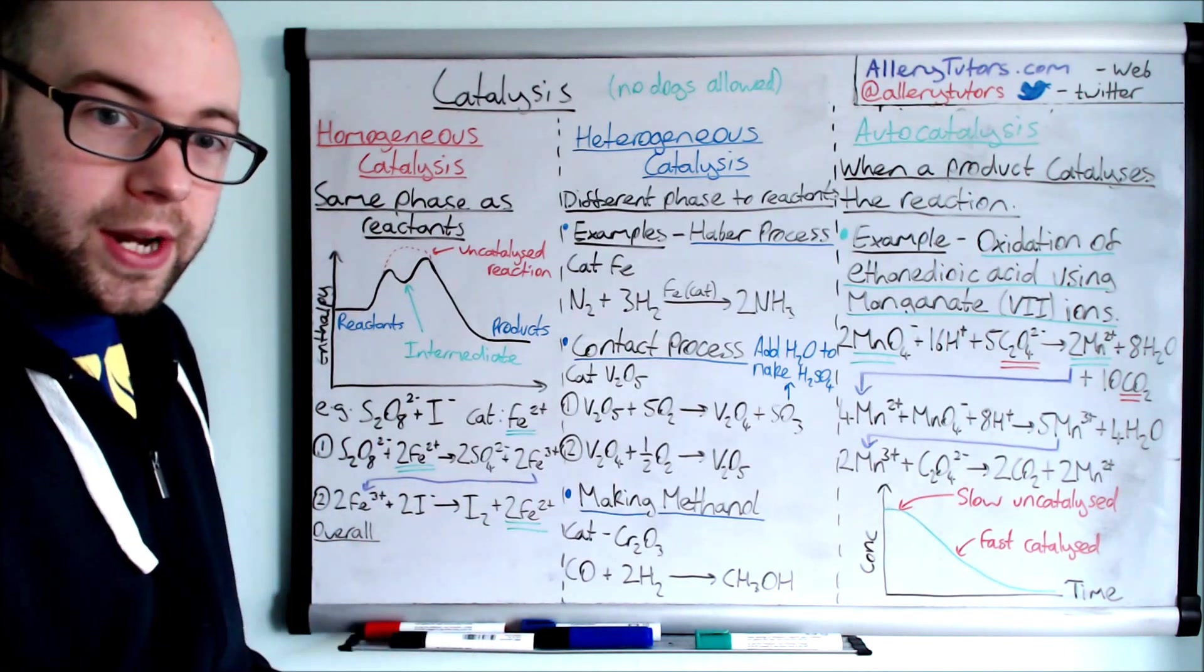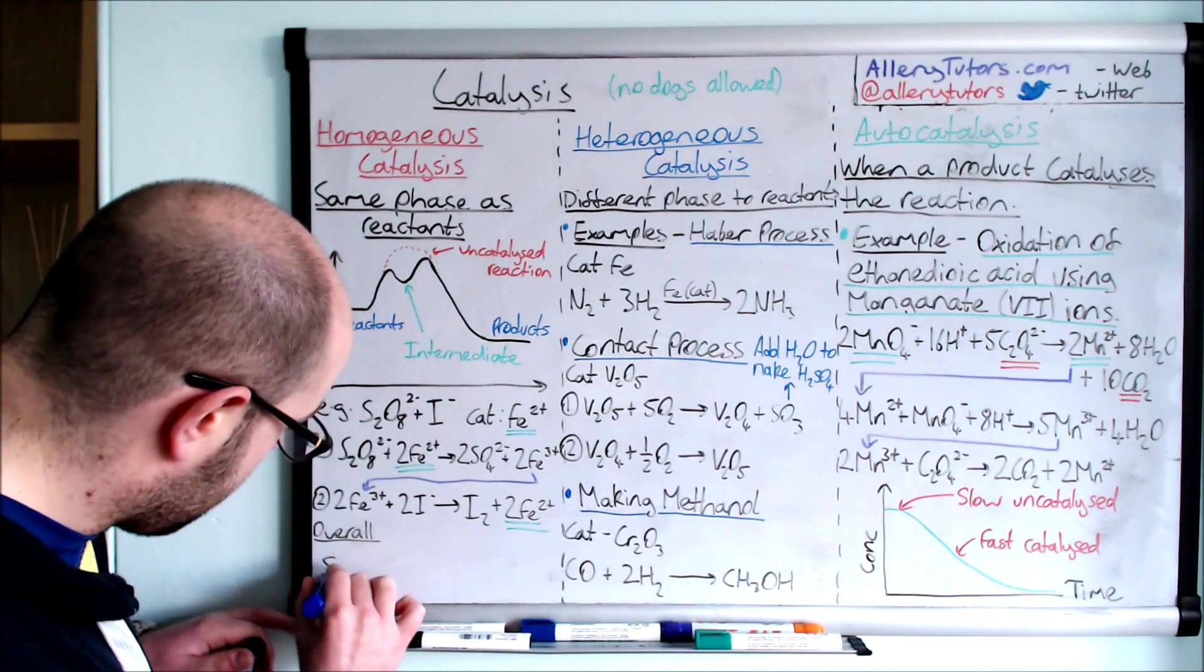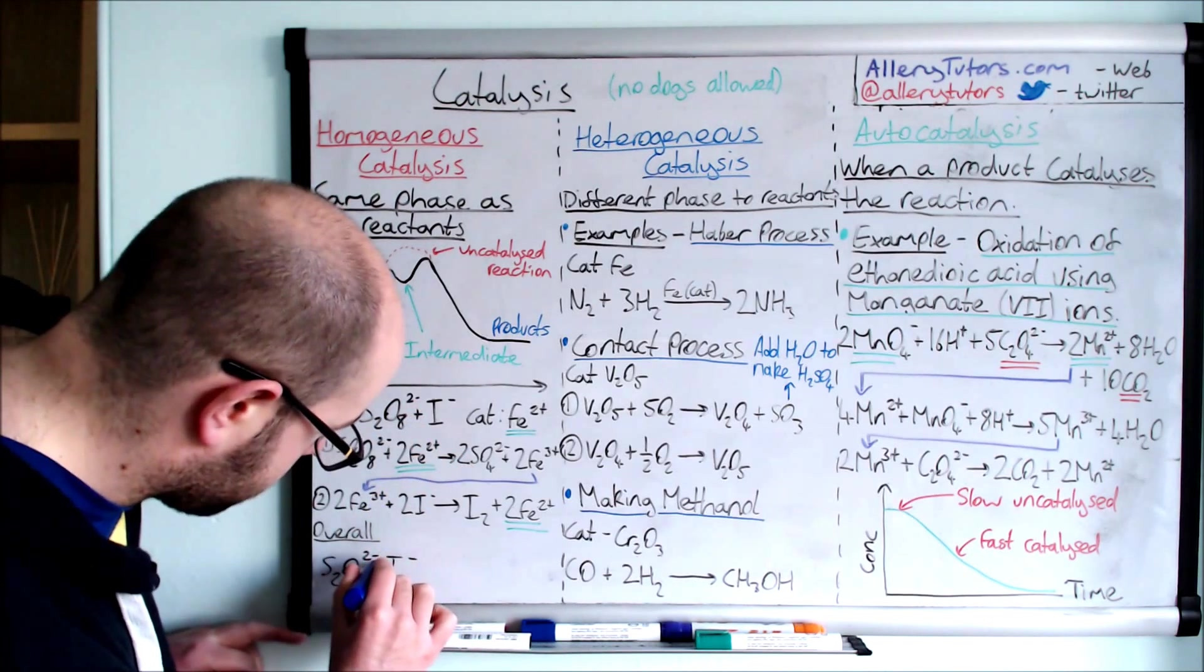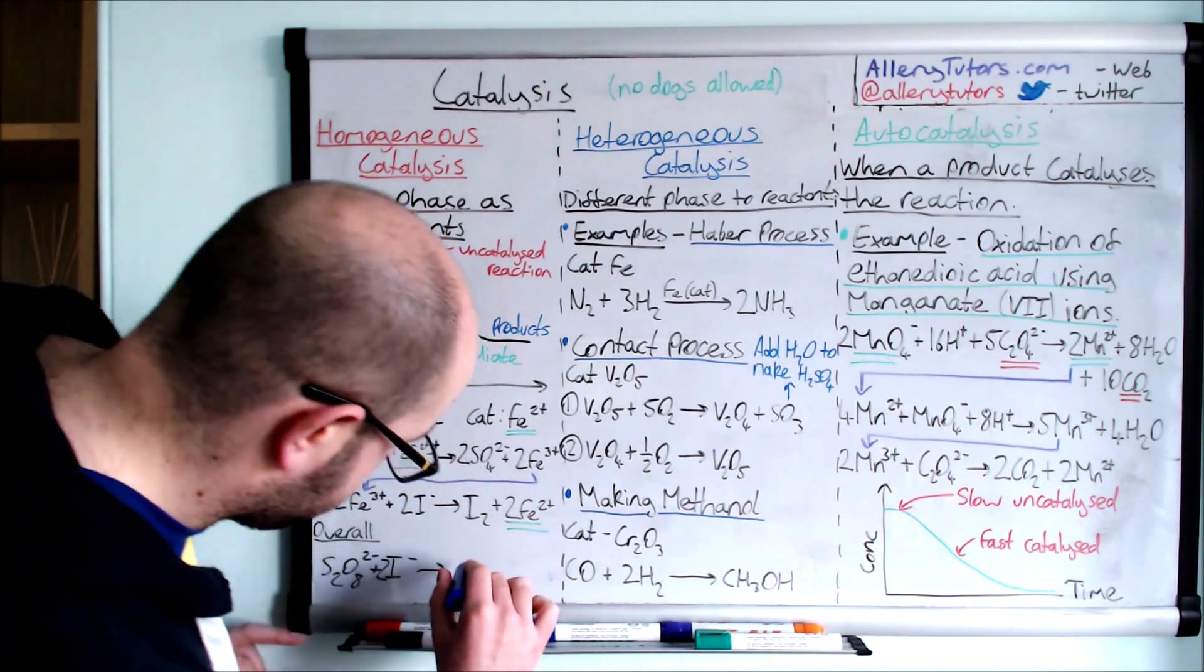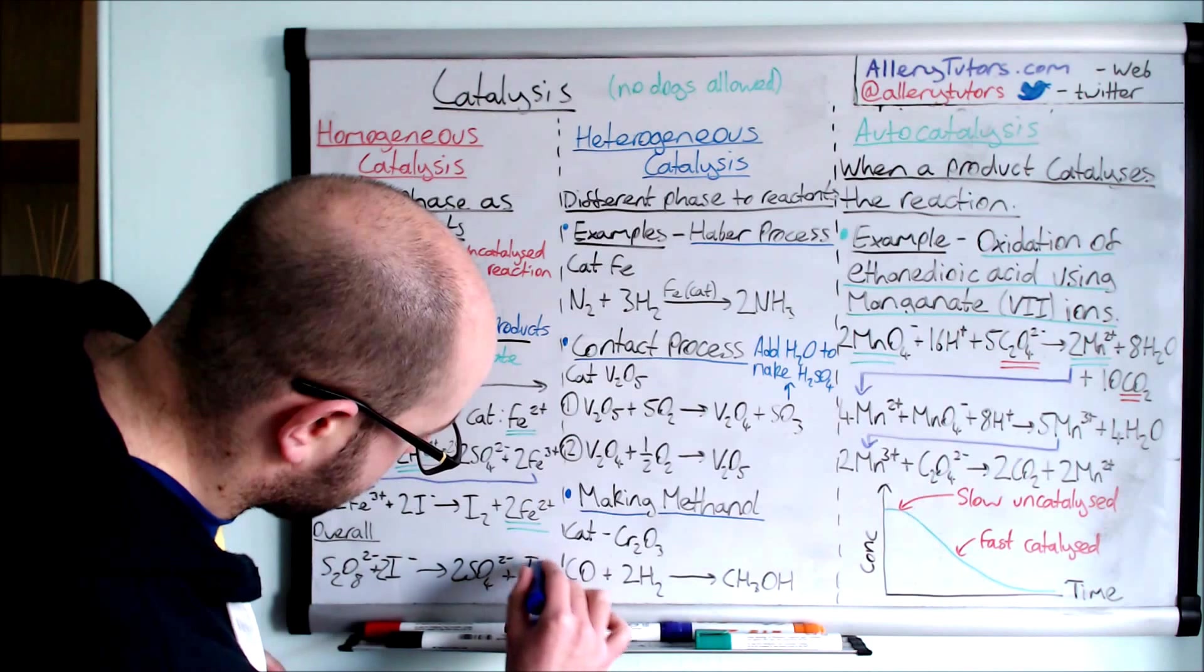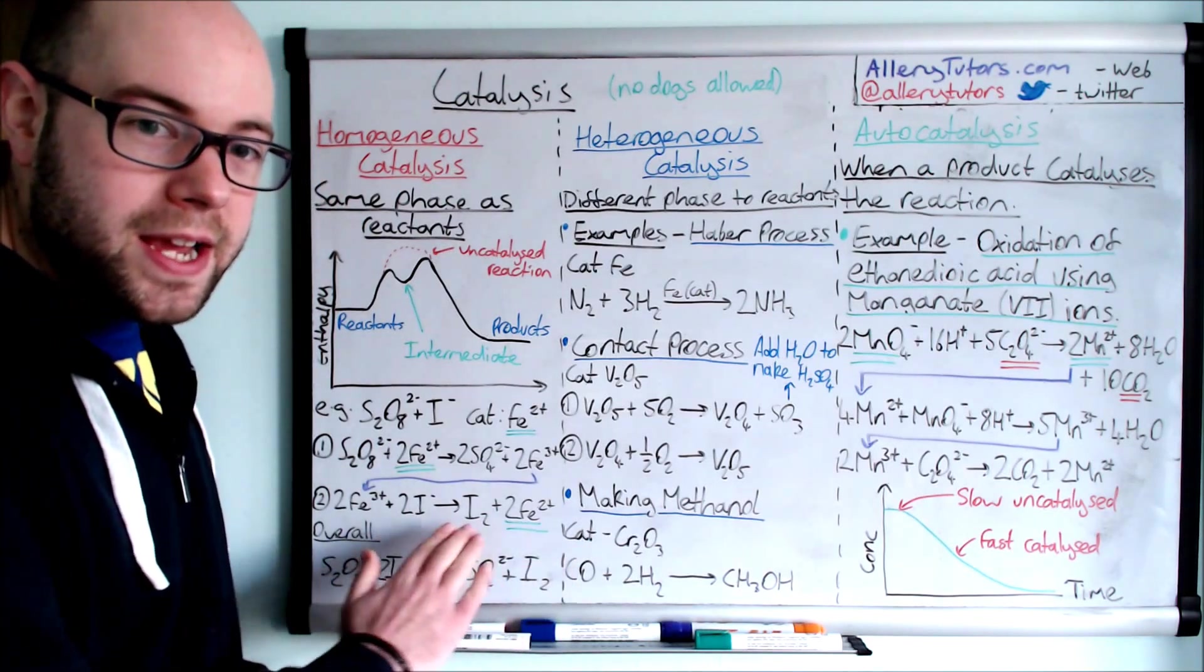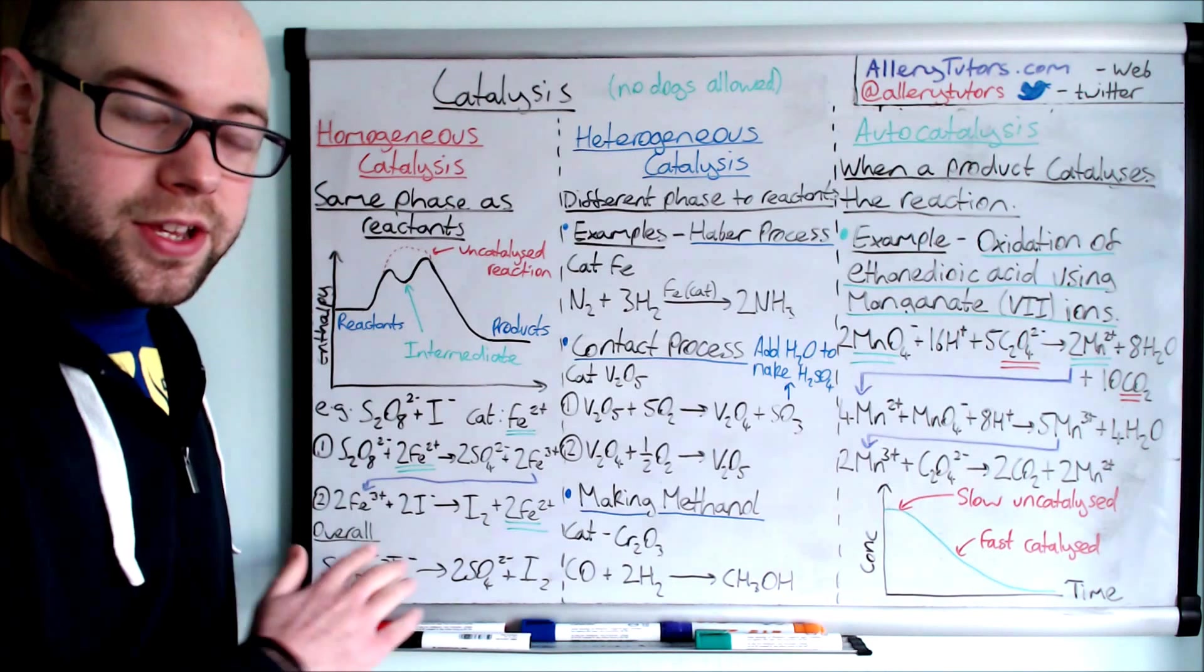So we're going to write the overall equation here. The overall equation is S2O8 2- reacting with 2I-, forming 2SO4 2- and iodine. Effectively what we've done is reacted two negatively charged ions together and formed this product. This is just a very basic overall equation showing what's actually happened. It's not the full ionic equation, so make sure if the exam asks that you need to be able to do that.